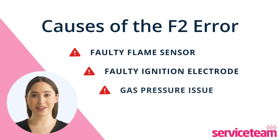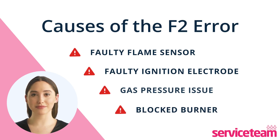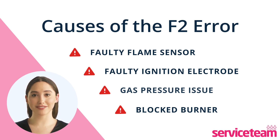The F2 fault code can also occur due to a blocked burner or a clogged heat exchanger. Debris like dust or dirt can block the burner, disrupting gas flow and extinguishing the flame, leading to the F2 code.